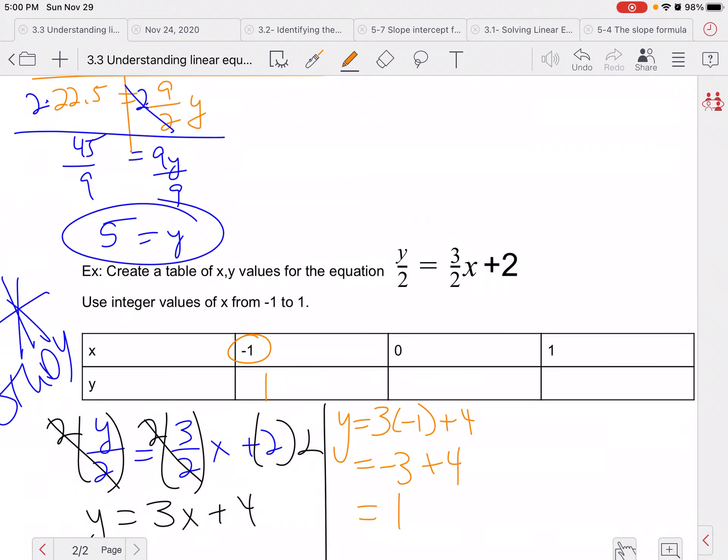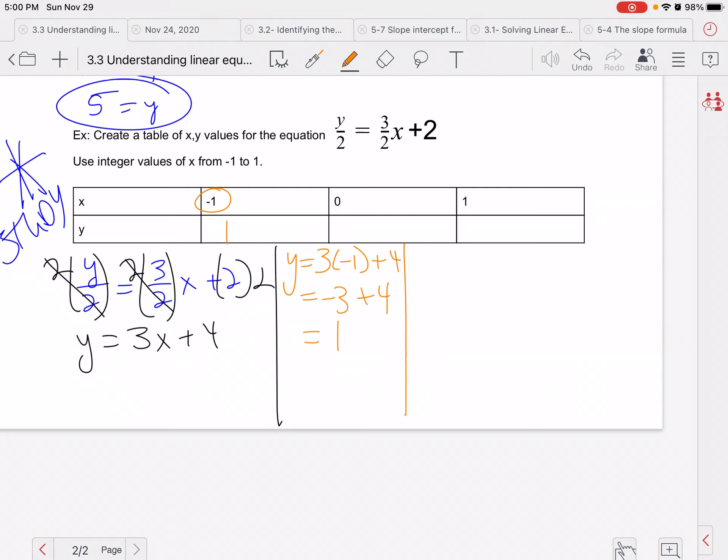Then I'm going to do this all over again. Same problem, but instead of writing negative 1, I'm going to write 0. So y equals 3 times 0 plus 4. So y is equal to 0 plus 4, which conveniently is just 4.